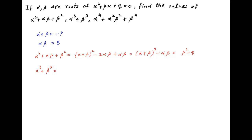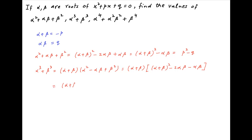Next, alpha cubed plus beta cubed is equal to alpha plus beta times in brackets alpha squared minus alpha beta plus beta squared. This is equal to alpha plus beta times in brackets alpha plus beta whole square minus 2 alpha beta, minus alpha beta. This gives alpha plus beta times in brackets alpha plus beta whole square minus 3 alpha beta, which is equal to minus P times in brackets P squared minus 3Q.